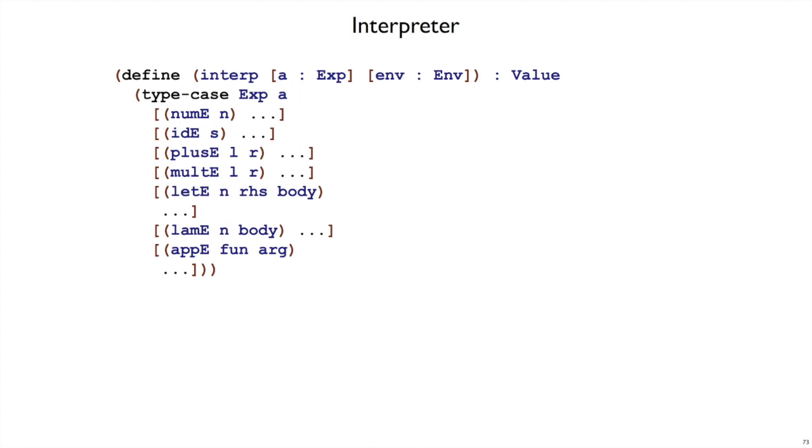Let's step through the actual interpreter code now. We've got interp, which takes an expression and an environment. We don't have to deal with the list of definitions anymore. We don't return a number anymore, we return value with a capital V.